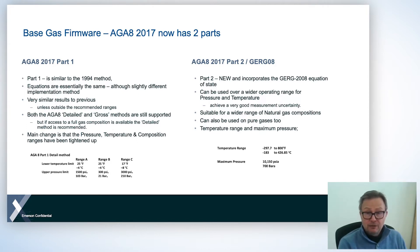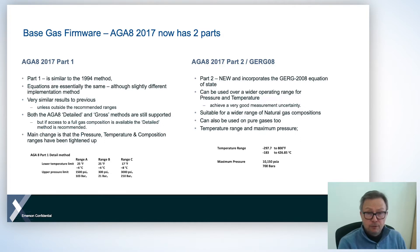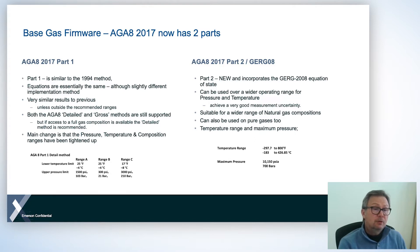If you go outside of the ranges, you'll start to see differences. But the big change in 2017 part one compared to the previous version is that the ranges have been tightened up. You can see at the bottom left the temperature and pressure limits for those ranges, tightened up compared to the previous version.